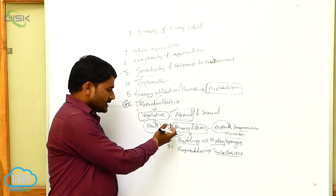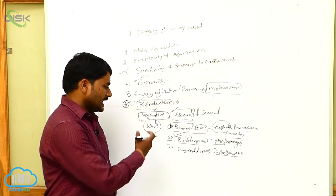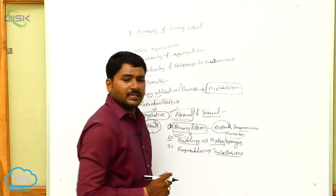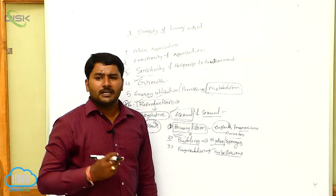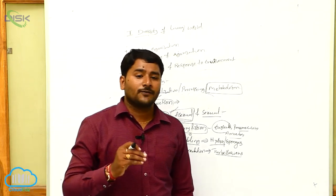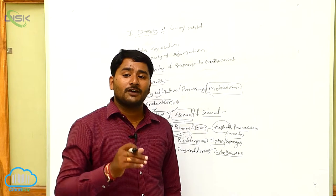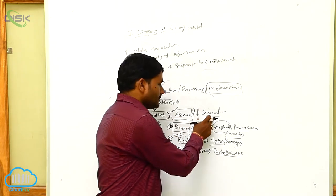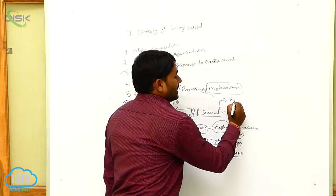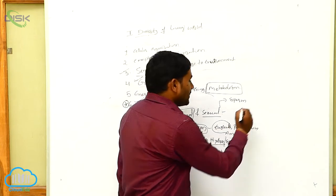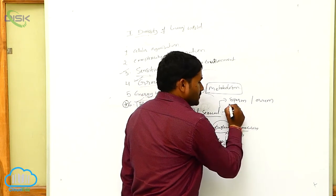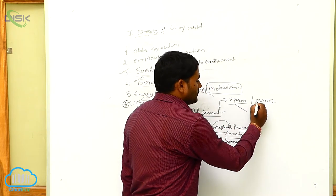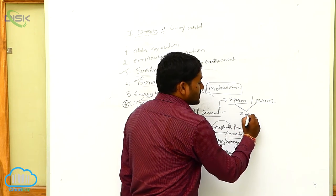Now let us see sexual reproduction. In sexual reproduction, it involves the formation and fusion of male and female gametes. The male gamete is the sperm and the female gamete is the ovum. When these gametes fuse, it causes the formation of a zygote.